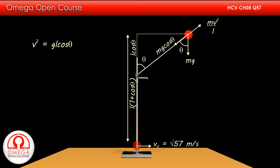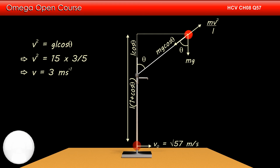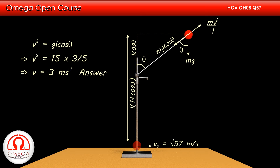From Equation 2, we have V² = gL cos theta. Putting the values of g and L and cos theta = 3/5, we get V² = 15 × (3/5), so V = 3 meters per second. This is the answer to part B of the question.